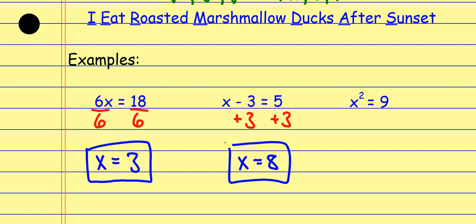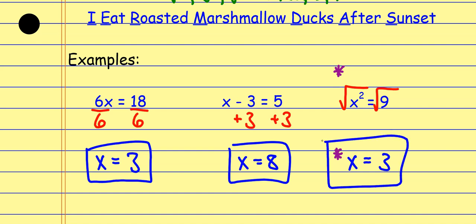We'll deal with these a little bit later in the course — you don't have to worry about this right now. But think about it: when we took the square root, that's the inverse of squaring things. So here I would take the square root of each side, the square root would cancel out, and I would get X equals three. Technically there's another answer we're missing, but we'll deal with that later. Just understand that those are inverses.